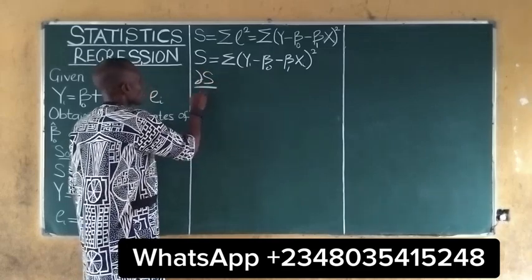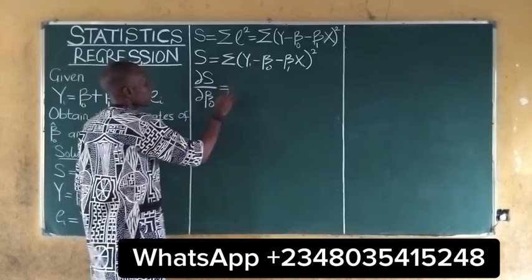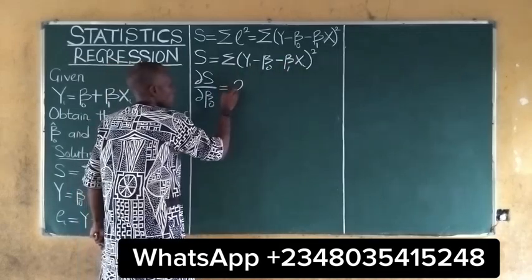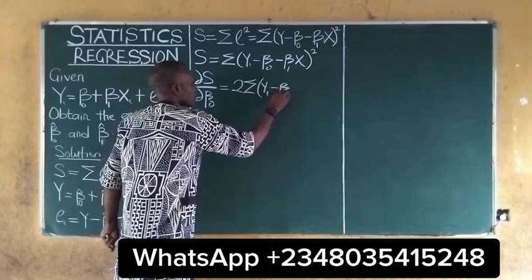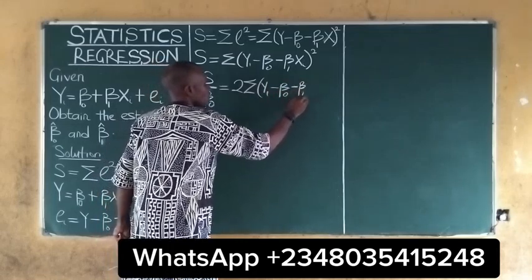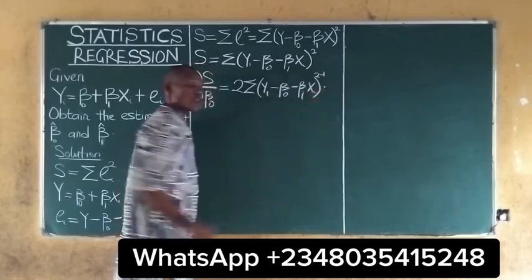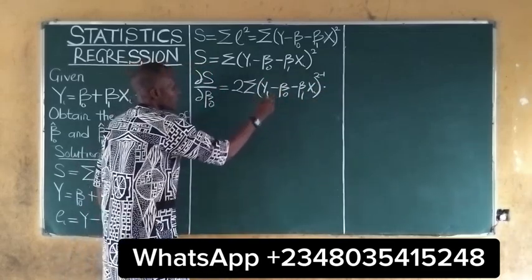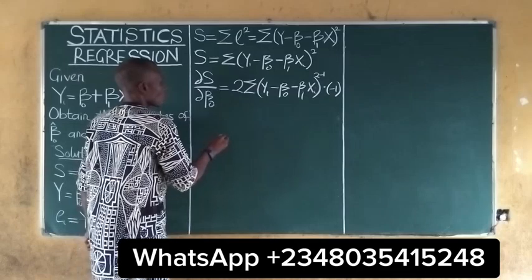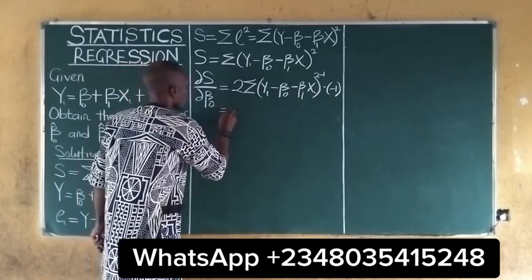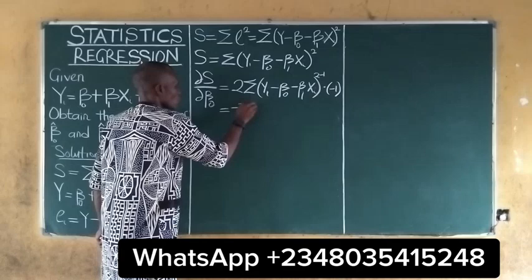First, we differentiate with respect to B0. If we differentiate this function with respect to B0, we have 2 summation of (Yi minus B0 minus B1*Xi) raised to the power of 2 minus 1. From the composite function rule, we differentiate what is inside with respect to B0, which gives minus 1. The next thing is to rearrange this function. It will be negative 2 summation,